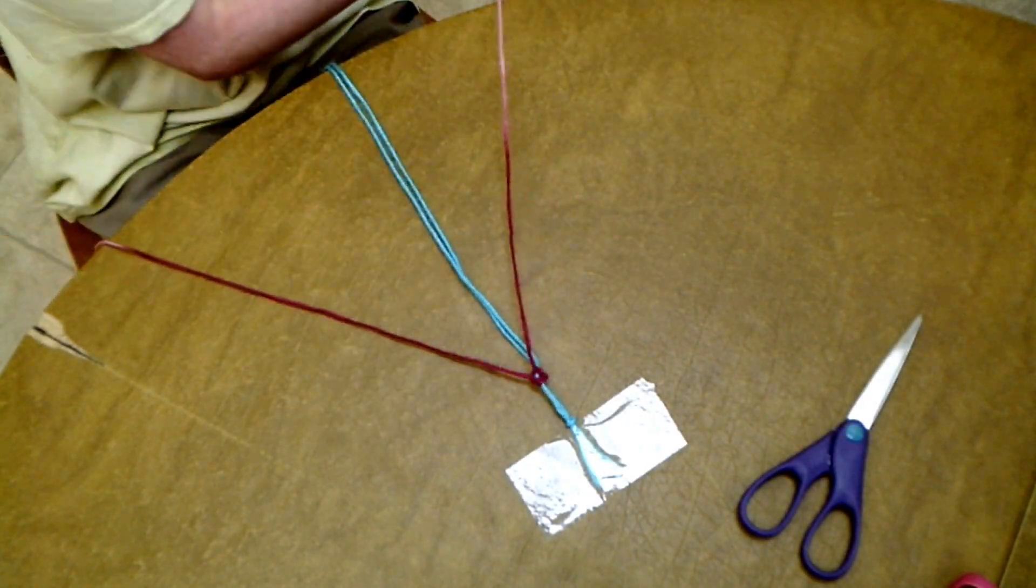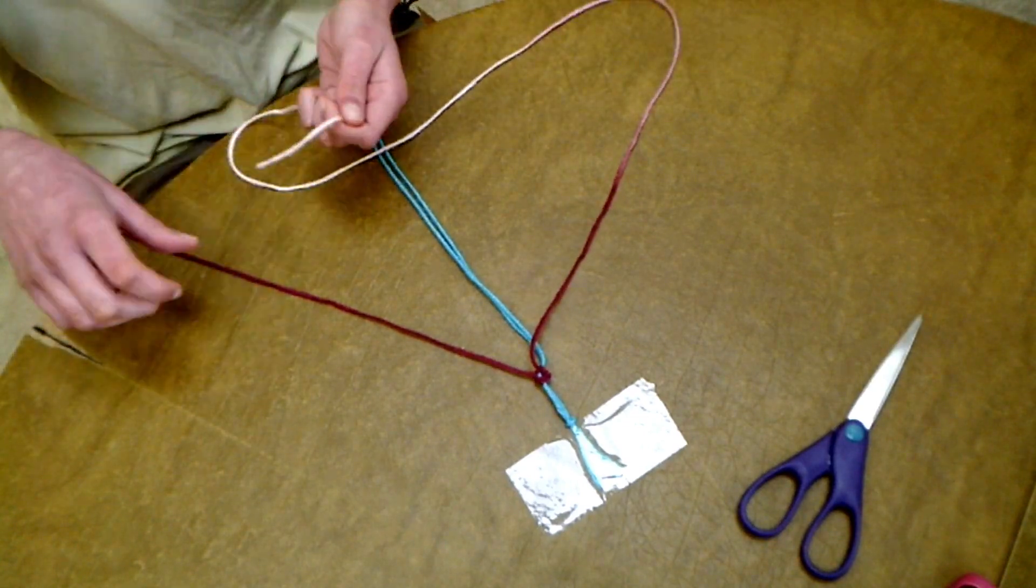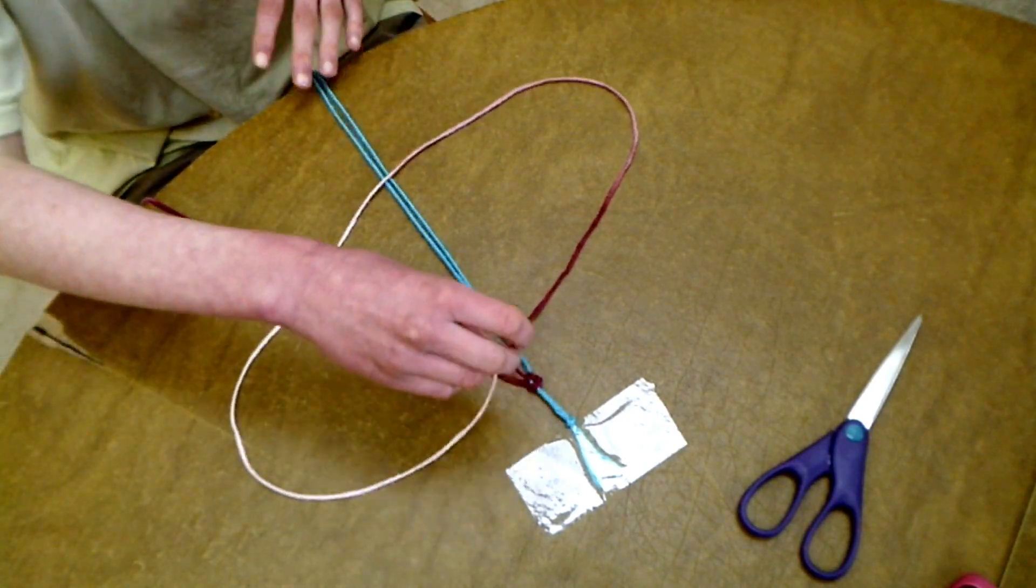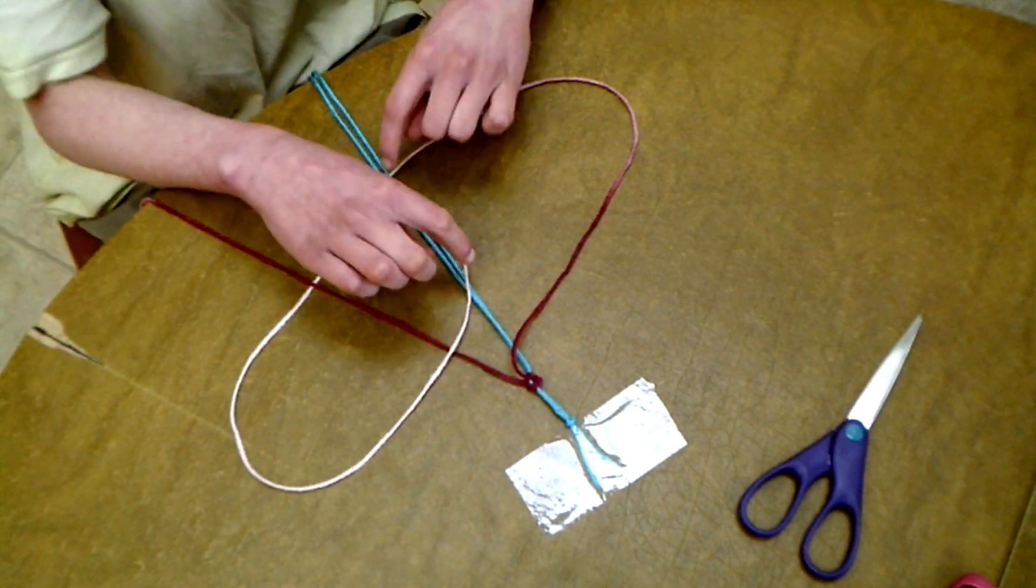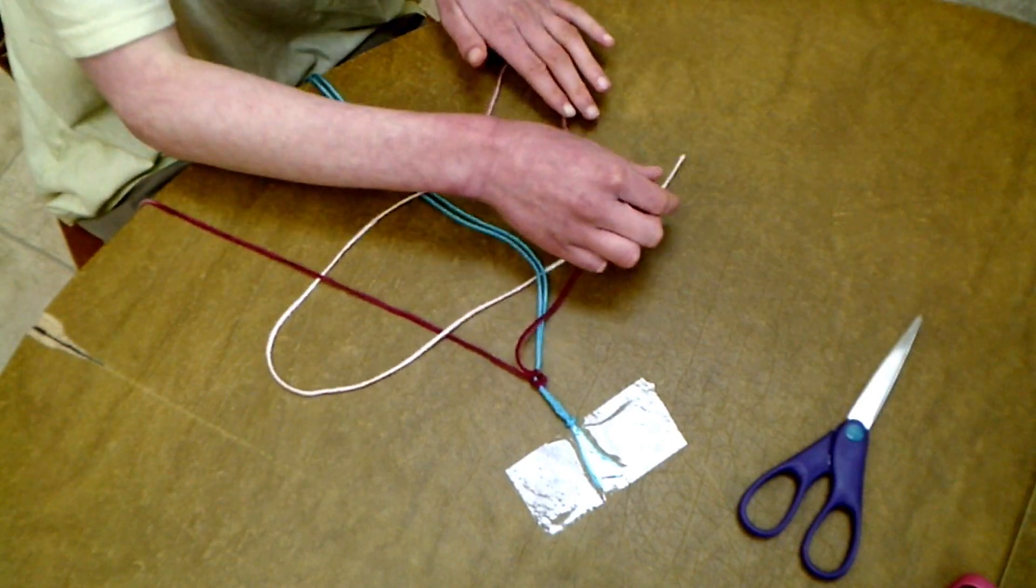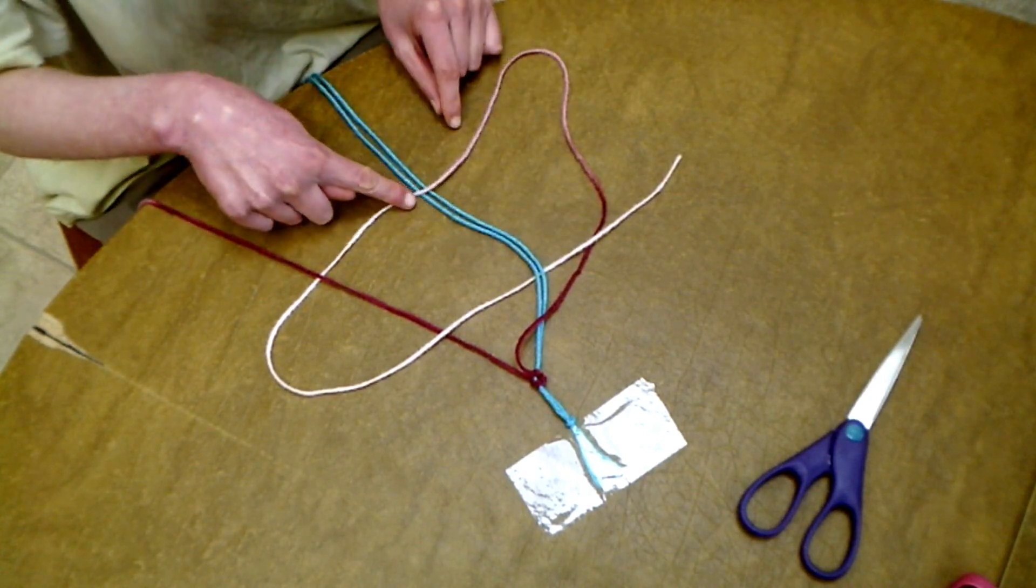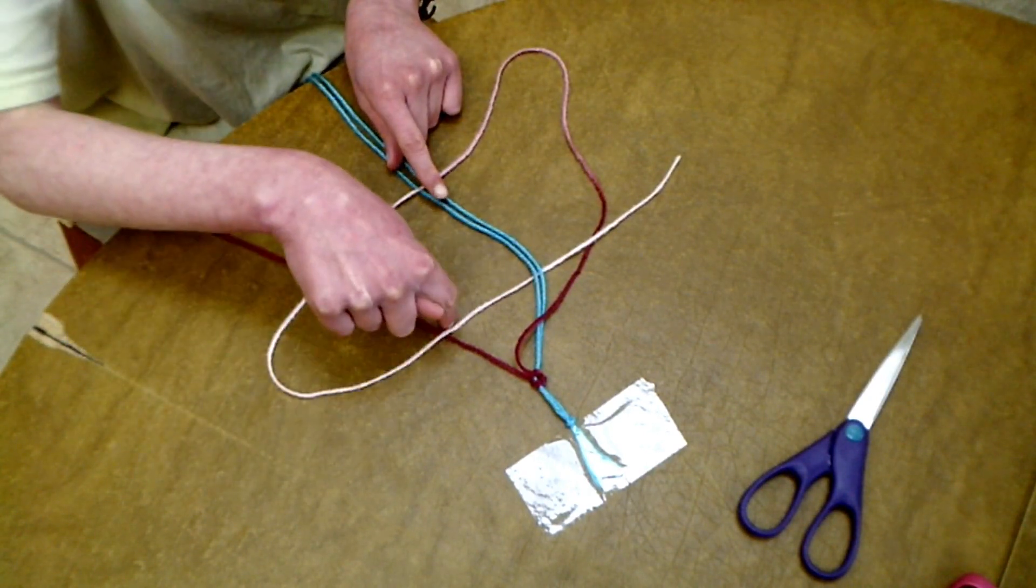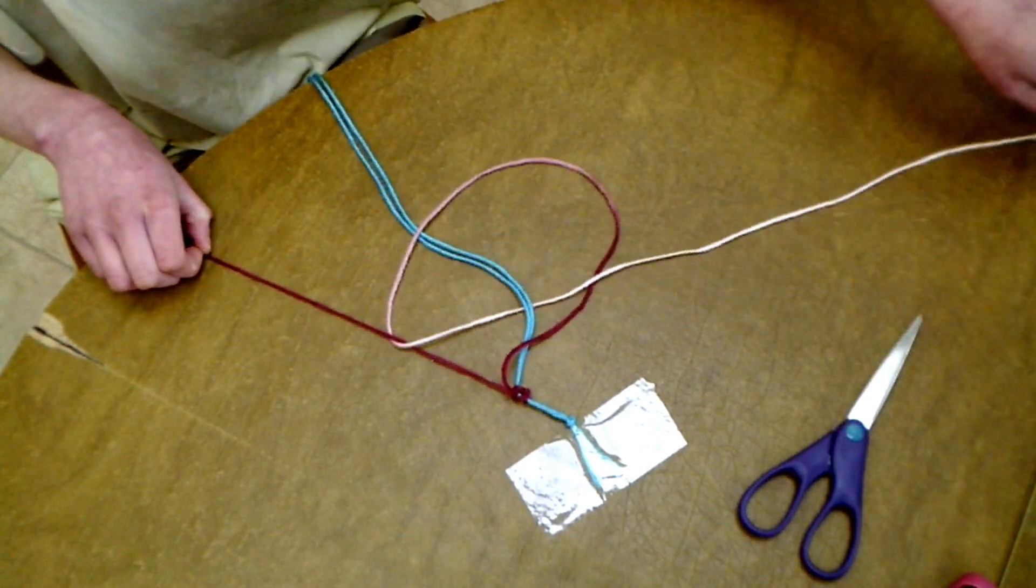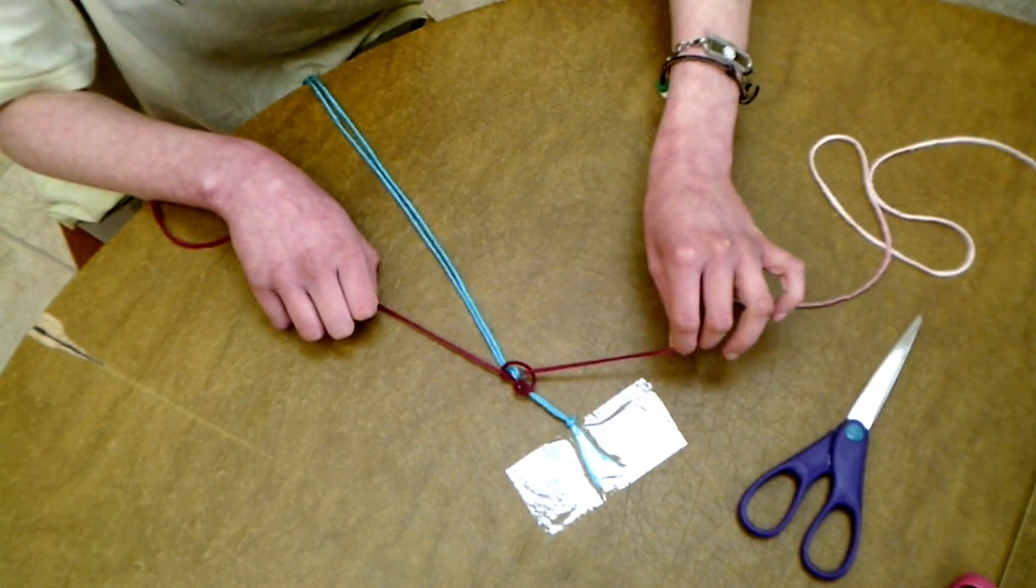Now, you want to take the left string, over the center, under the right string. And wrap, go around, over the right string, under the center, over the left string. See how that goes? Over, under, over, under, and over. And gently pull it tight. Okay?